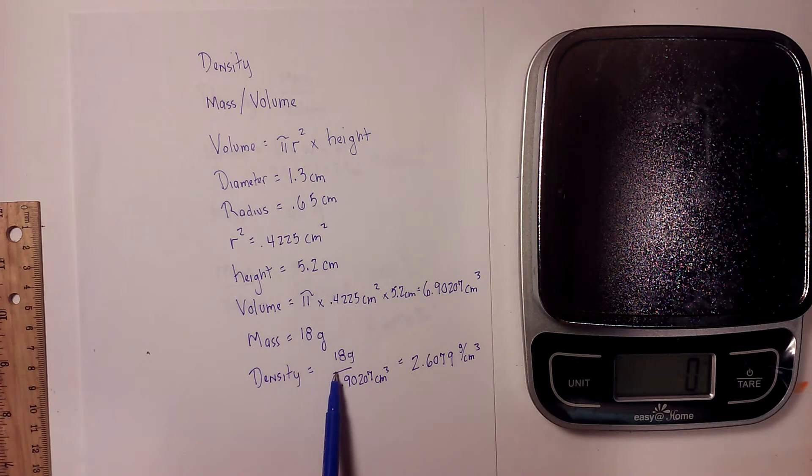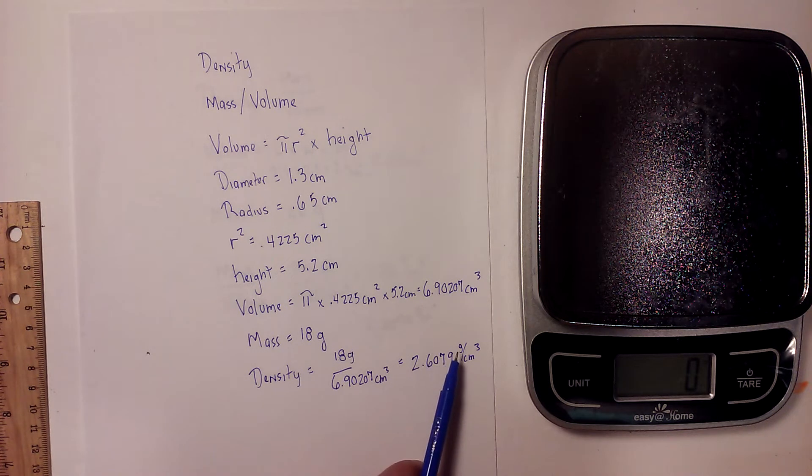So now to get the density I just take 18 divided by the volume, which is 6.90207 centimeters cubed, and that equals 2.6079 grams per centimeters cubed.